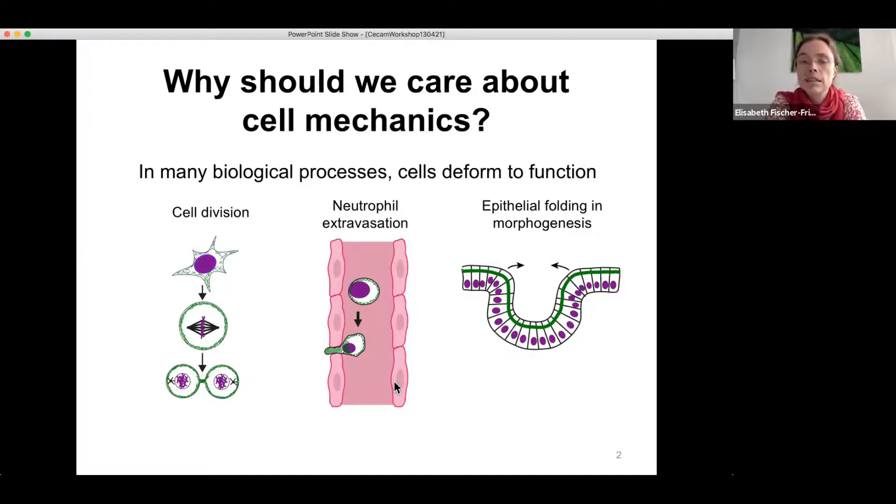And another example is morphogenesis, so the process of the emergence of shape of an organism, for instance during embryogenesis. And one particular example shown here is the process of epithelial folding.